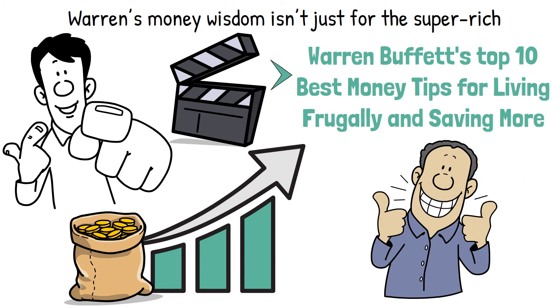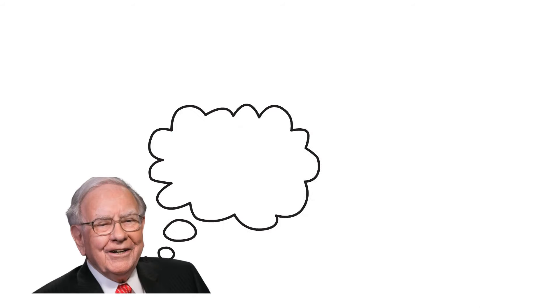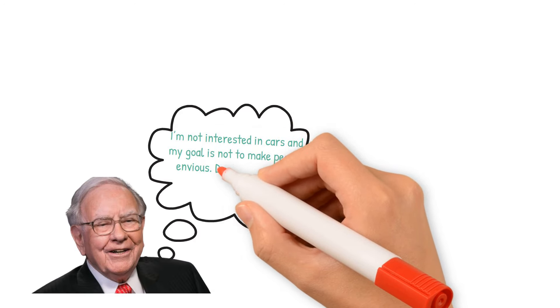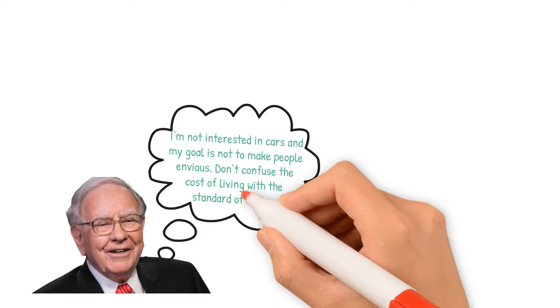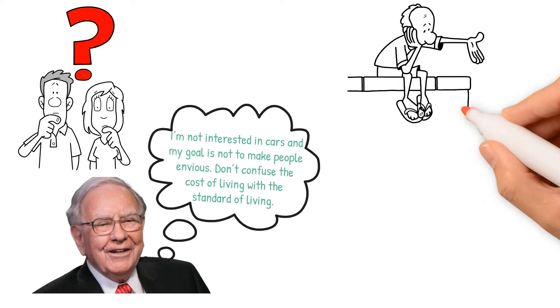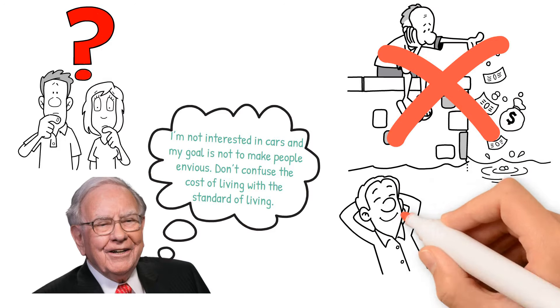The first tip for living frugally and saving more is about live below your means. Buffett once said, I'm not interested in cars, and my goal is not to make people envious. Don't confuse the cost of living with the standard of living. What does this really mean? It's about not spending more than necessary and enjoying a comfortable but not excessive lifestyle.